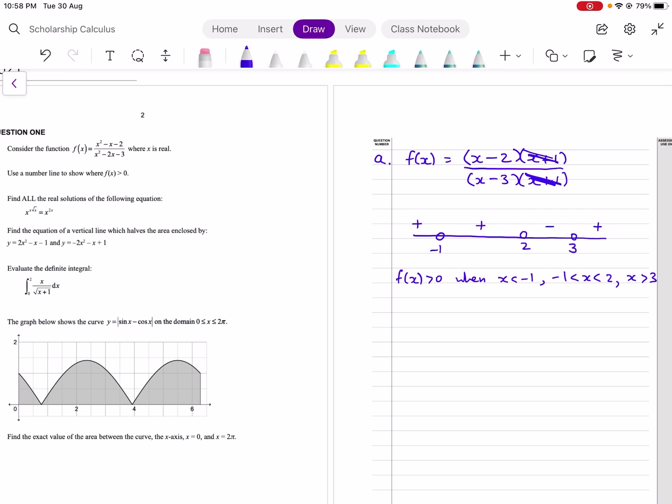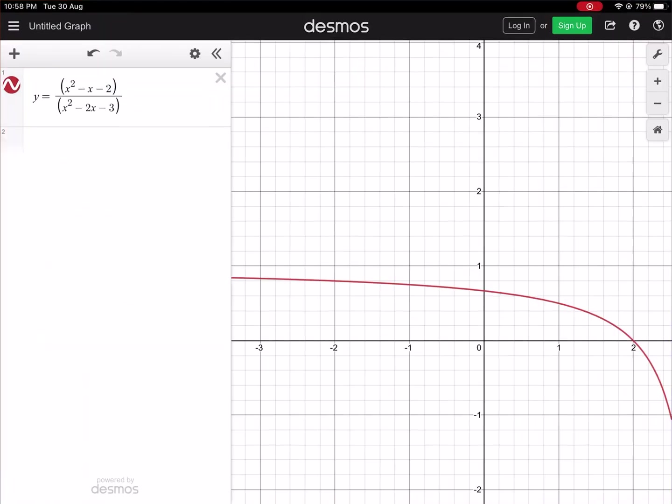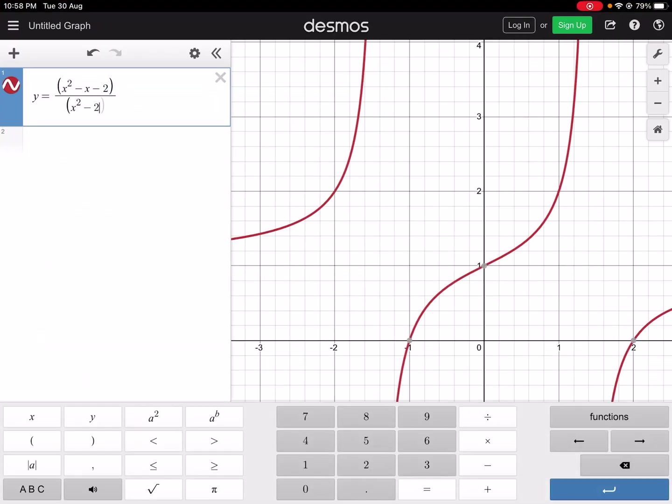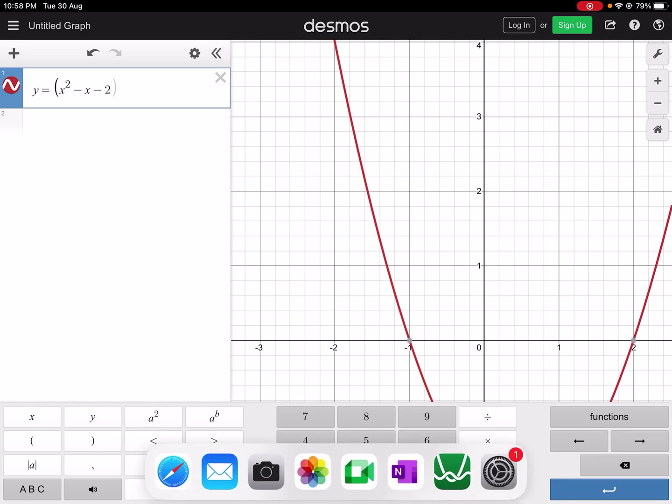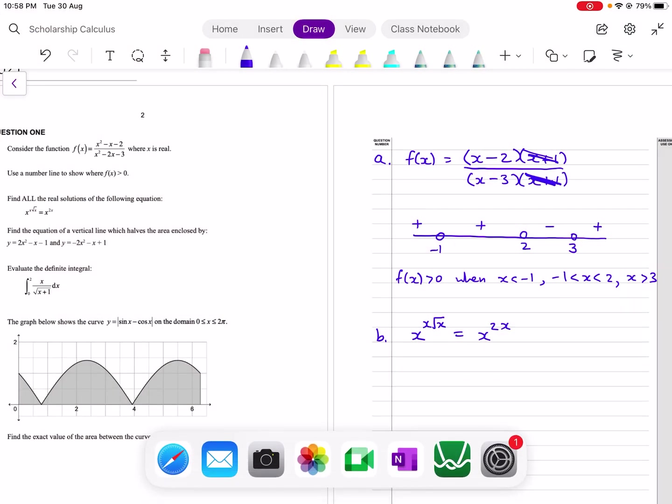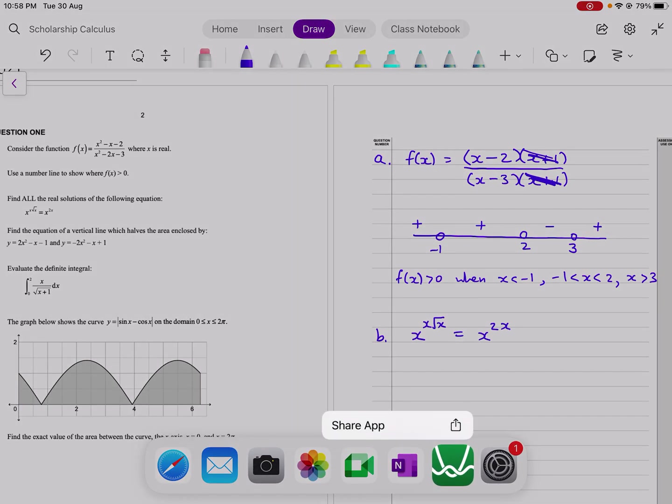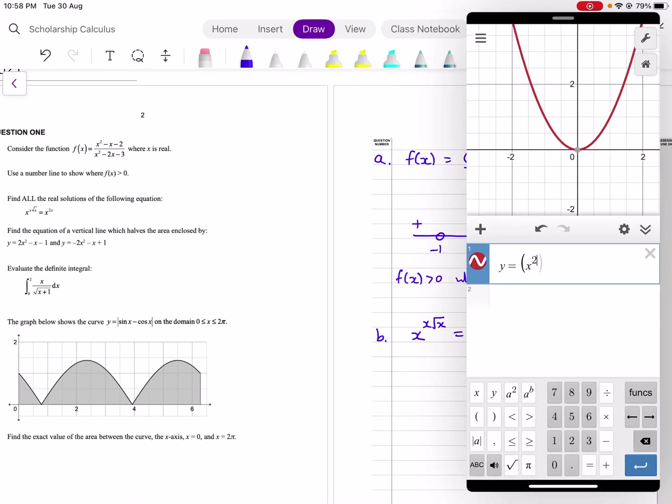The second one, I would use a graph to have a look at this one as well. I'll just graph the left-hand side as one graph and the right-hand side as another. Let's look at x to the power of x squared x, and then the other one, x to the power of 2x.